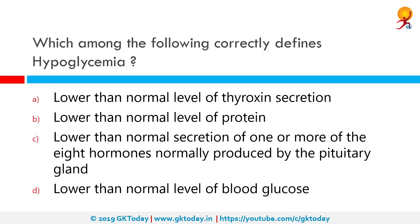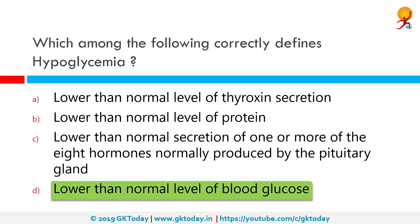Which among the following correctly defines hypoglycemia? The correct answer is a lower than normal level of blood sugar. Hypoglycemia is a condition caused by a very low level of blood sugar or glucose, where the body's main energy source is less than what is required. Hypoglycemia is often related to the treatment of diabetes, but a variety of conditions can cause low blood sugar in people without diabetes.